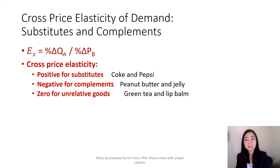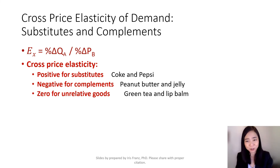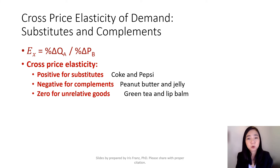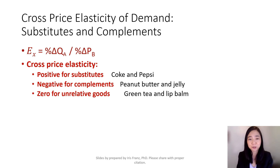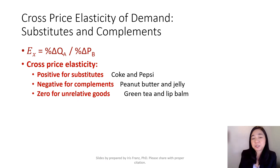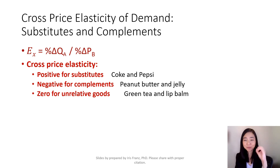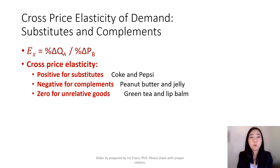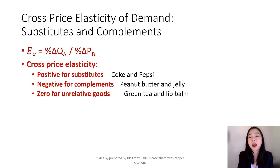Finally, you get a zero cross price elasticity of demand for unrelated goods. So if the price of lip balm goes up, are you going to buy more or less green tea? It's not going to affect your purchase of green tea whether the price of lip balm goes up or down. Therefore, the percentage change in quantity demanded of green tea is equal to zero, and that's why cross price elasticity of demand equals zero for unrelated goods.